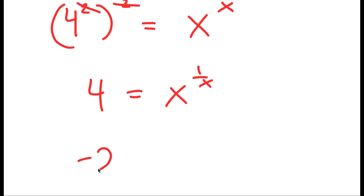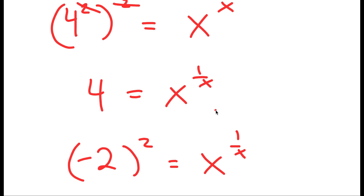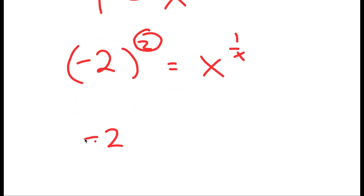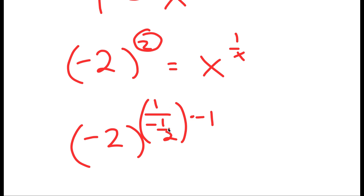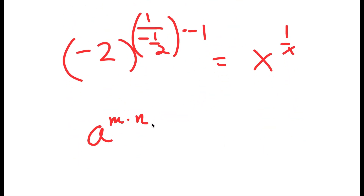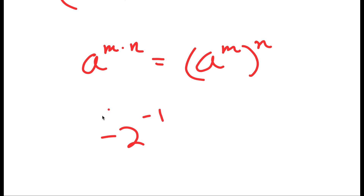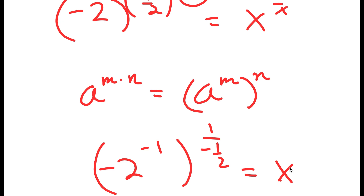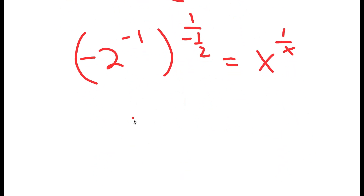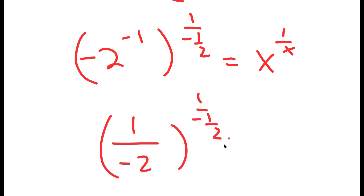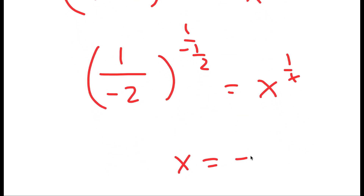Now, 4 is the same thing as negative 2 squared. And 2, our exponent here, I can rewrite as 1 over negative 1 half, and I have this times negative 1. So I have 1 over negative 1 half times negative 1. Remember, if I have something in the form a to the power of m times n, this is equal to a to the power of m to the power of n. So this negative 1, I'm going to move to be an exponent of negative 2. So I get negative 2 to the power of negative 1 to the power of 1 over negative 1 half is equal to x to the power of 1 over x. And negative 2 to the power of negative 1 is 1 over negative 2, which is negative 1 half. So my solution is negative 1 half.